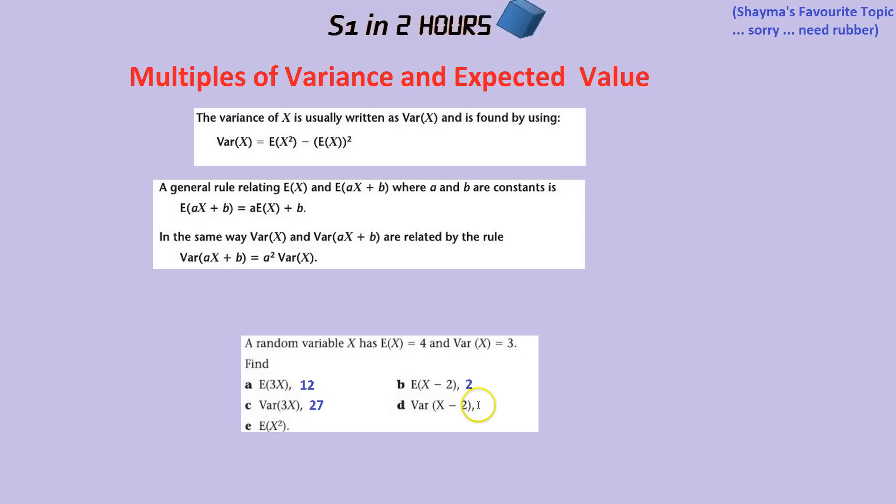What happens if we take away 2? We take away 2 from the variance, right? No. Remember when there's an add or minus, that has no effect on the variance. So the variance would stay at 3.